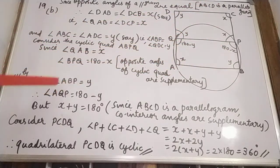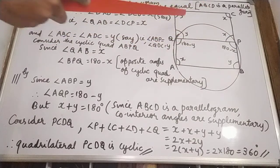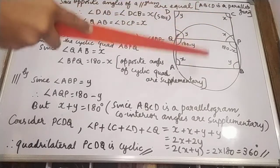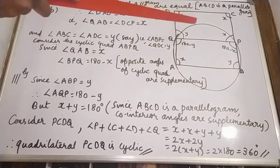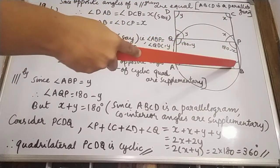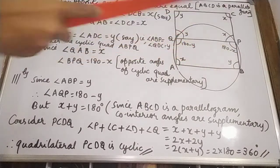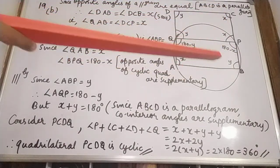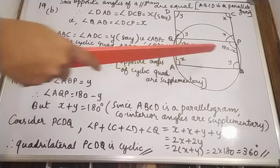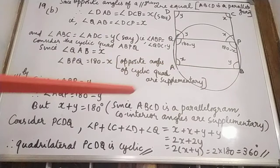Since ABCD is a parallelogram, opposite sides are parallel. Therefore X and Y are co-interior angles. Co-interior angles are supplementary in a parallelogram, so X plus Y equals 180 degrees.